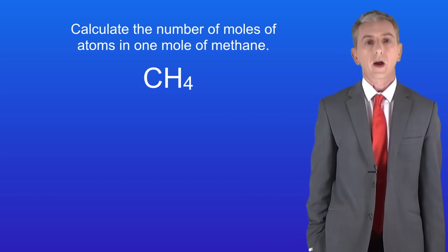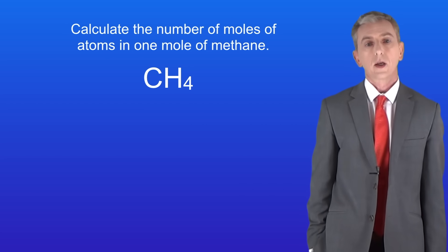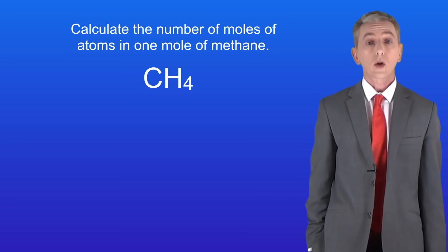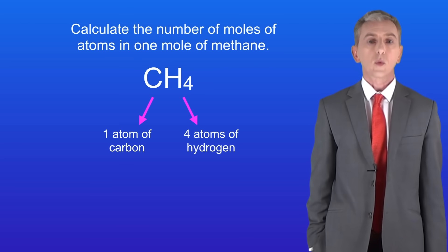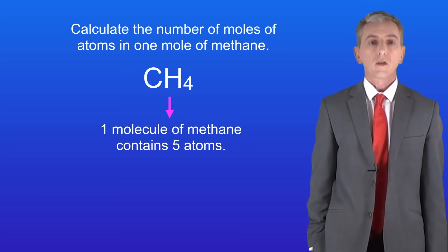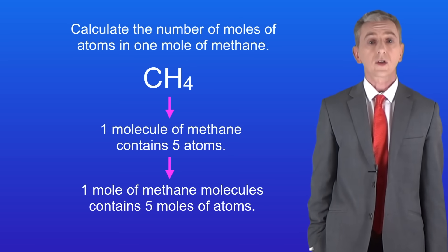Here's one for you to try. Calculate the number of moles of atoms in one mole of methane molecules. Pause the video and try this yourself. We can see that one molecule of methane contains one atom of carbon and four atoms of hydrogen, in other words five atoms in total. Because one molecule of methane contains five atoms, we know that one mole of methane molecules must contain five moles of atoms.